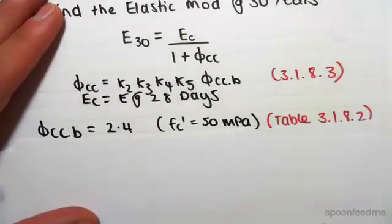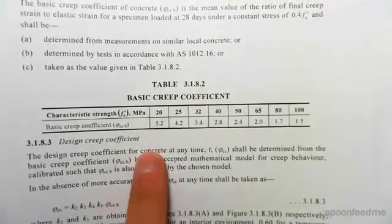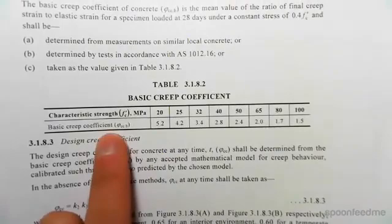So the first thing we're finding is φcc.b. You come to table 3.1.8.2 and you find the characteristic strength fc'.